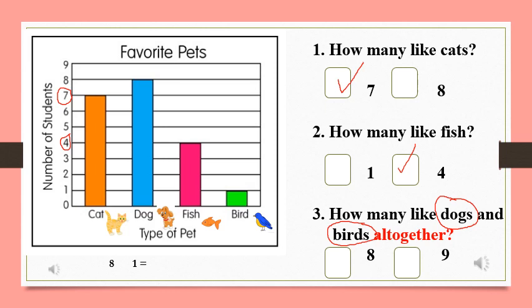All together means we need the plus sign. We now have an addition number sentence and we know how to solve this right? Easy peasy lemon squeezy, put it in a box and make it cheesy.